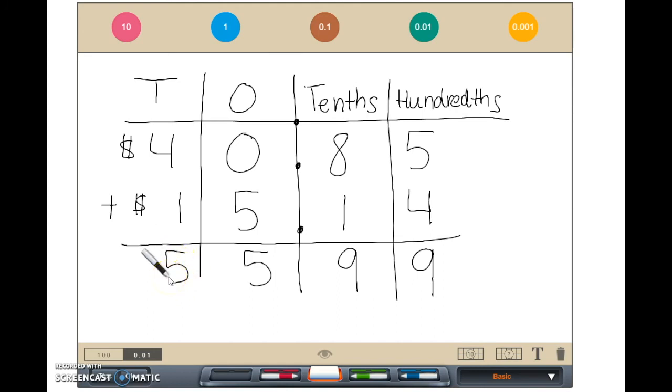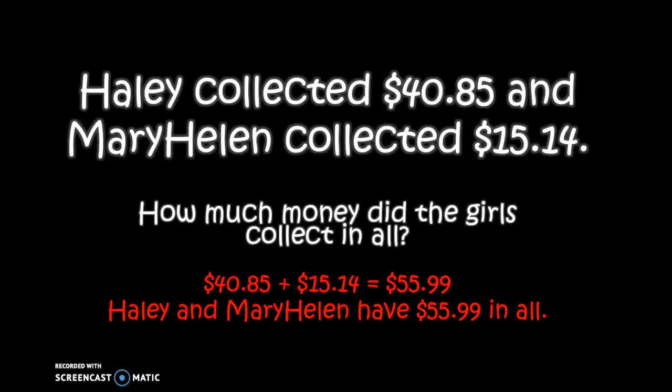You are left with fifty-five dollars and ninety-nine cents. As you saw, we moved from concrete to pictorial to abstract models to represent our word problem. We received the same answer each time.